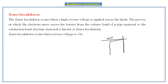The Zener breakdown occurs in the Zener diode at less than 5 volts. Since the voltage remains constant during breakdown, the Zener diode is used as a voltage regulator. This covers both avalanche breakdown and Zener breakdown mechanisms.